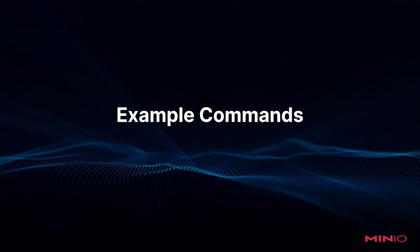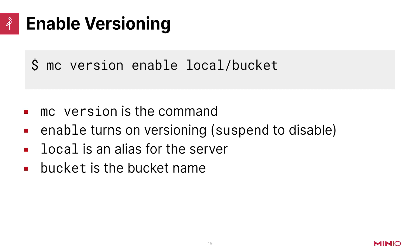Let's take a look at some example commands. To enable versioning on a bucket, it's mc version enable, then your alias and the bucket name. If you want to suspend versioning, simply use suspend. Now if you suspend versioning and you already have versioned objects in the bucket, it's not going to delete them. When you start uploading the same object again, it will create a null version ID as the latest version, and that null ID will just be replaced each time. If you turn versioning back on, the next upload will create a new version ID, but the null ID one will still be there as well.